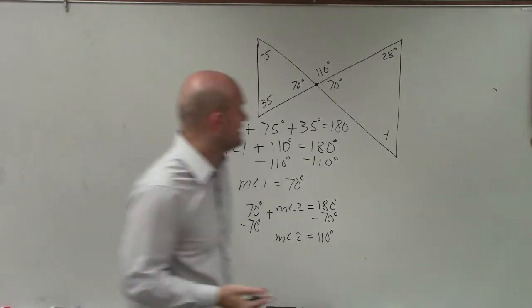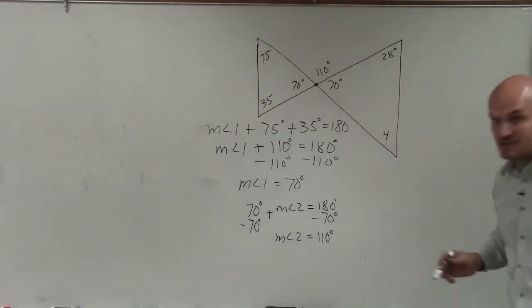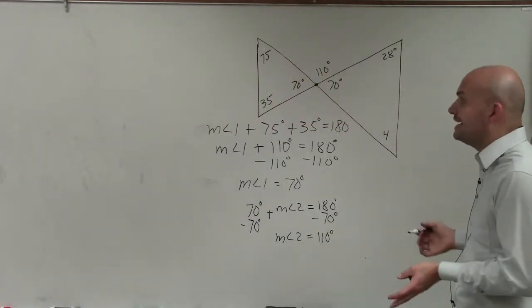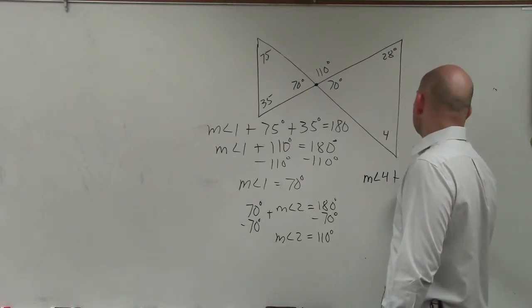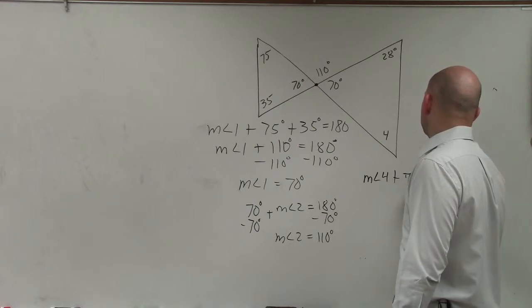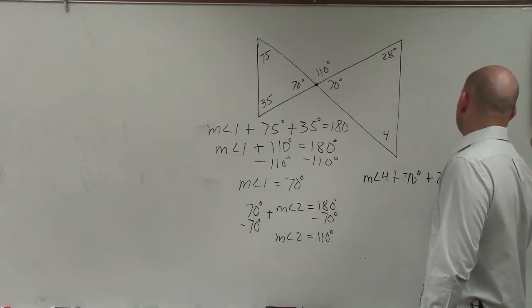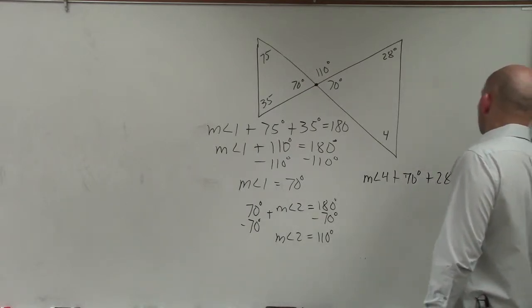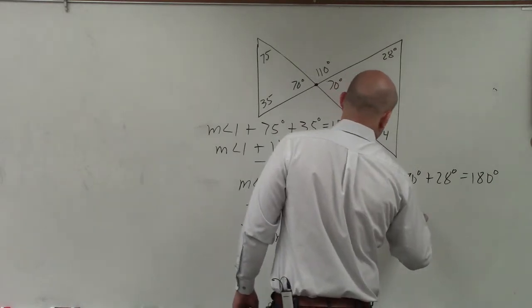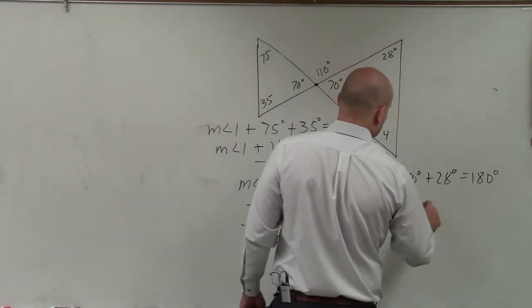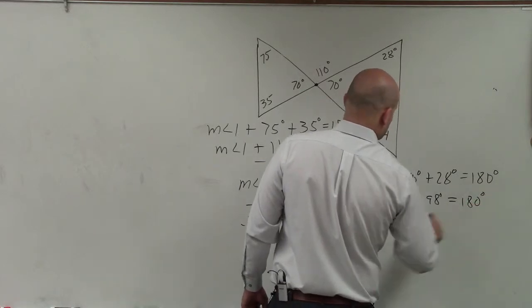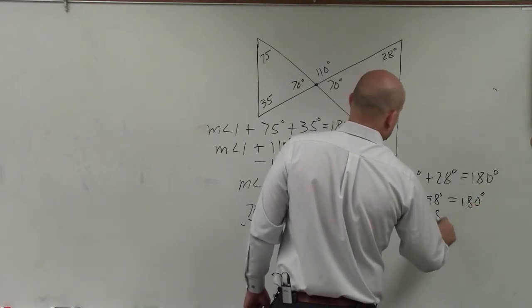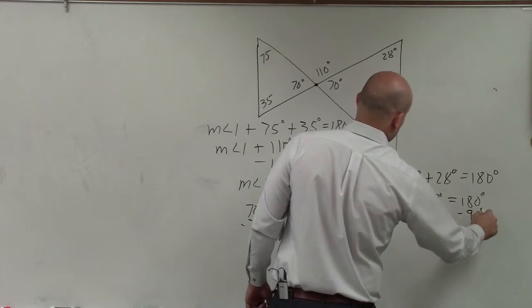So now lastly, all we need to do is figure out what angle 4 is. And again, I can go back to using my angle sum theorem, saying that measure of angle 4 plus 70 degrees plus 28 degrees equals 180 degrees. So measure of angle 4, I combine these plus 98 degrees equals 180 degrees. Subtract 98 degrees, subtract 98 degrees.